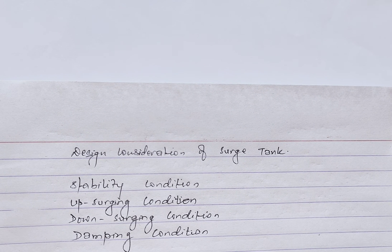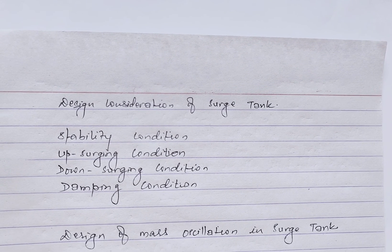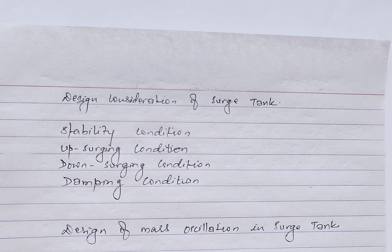The last major design consideration is the damping condition: the source tank should be damped even if succeeding load fluctuations arise. Now let's talk about the design of mass oscillation in the source tank. Controlling mass oscillation in a source tank involves understanding the dynamic fluid flow and pressure changes.